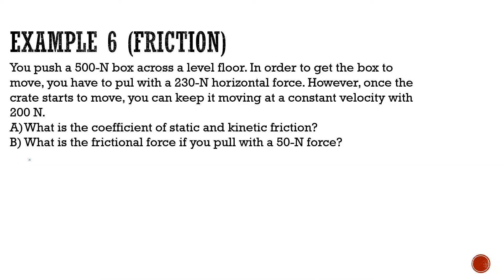Let's look at example six. You push a 500-newton box across a level floor. To get the box to move, you have to pull with 230 newtons of horizontal force. However, once the crate starts to move, you can keep it moving at constant velocity with 200 newtons. We'll find the coefficient of static friction and kinetic friction. Drawing the free body diagram: we have force of gravity, force normal, force applied, and force of friction. Since nothing is applied in the y direction, the normal force is also 500 newtons. The block doesn't move until 230 newtons, so the maximum static friction force is 230 newtons.